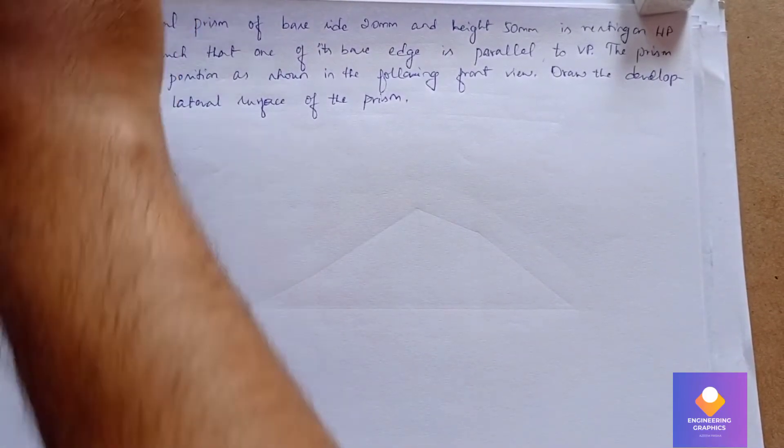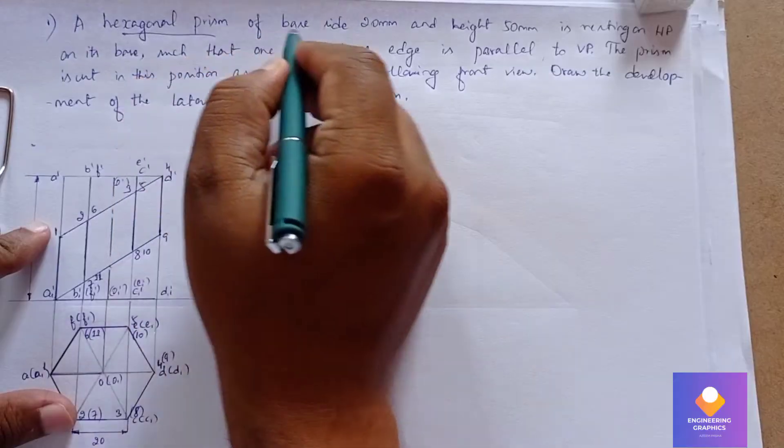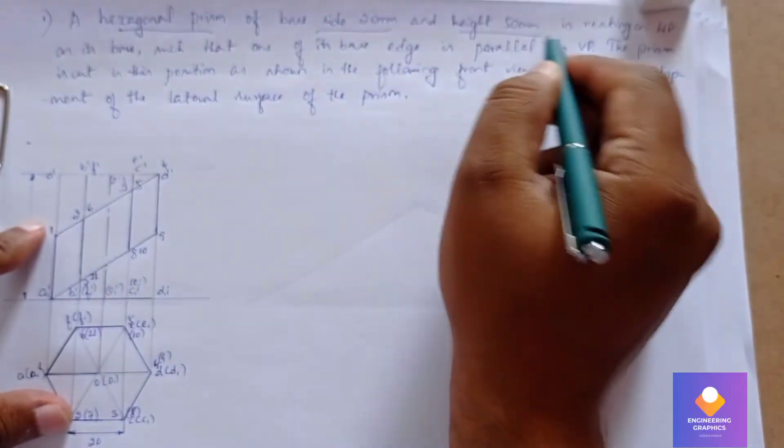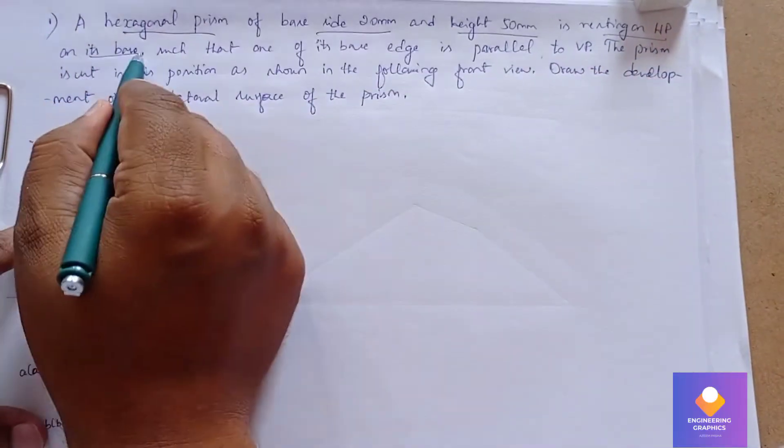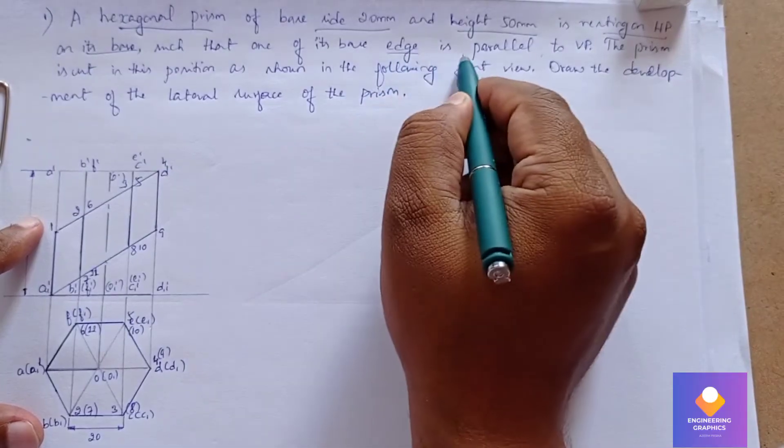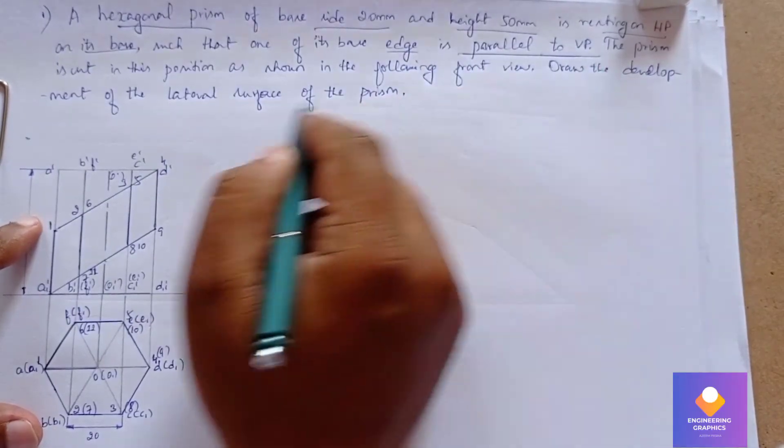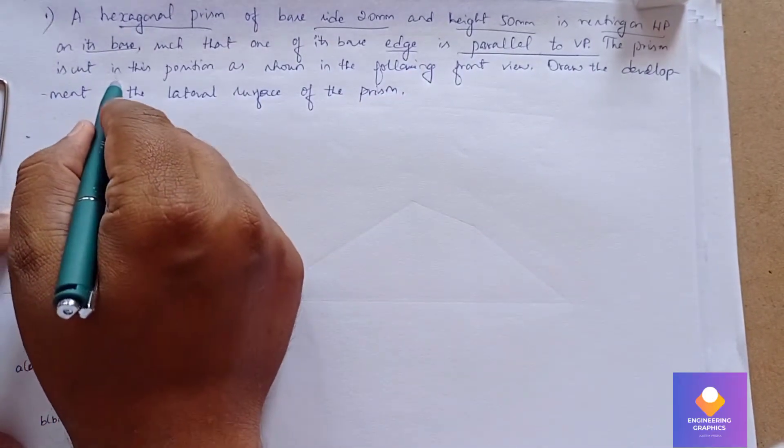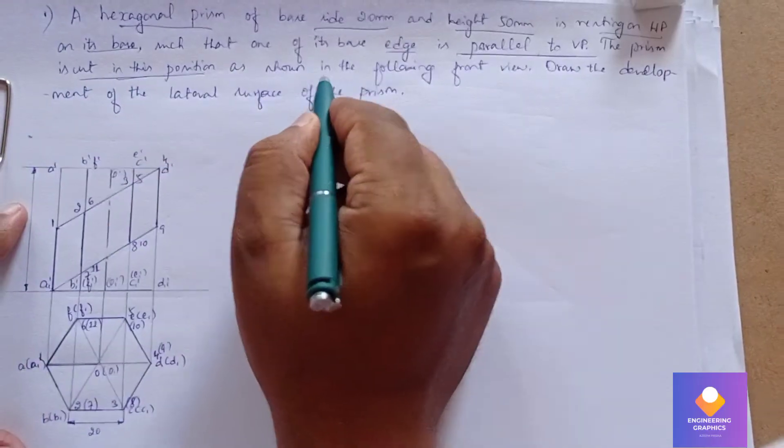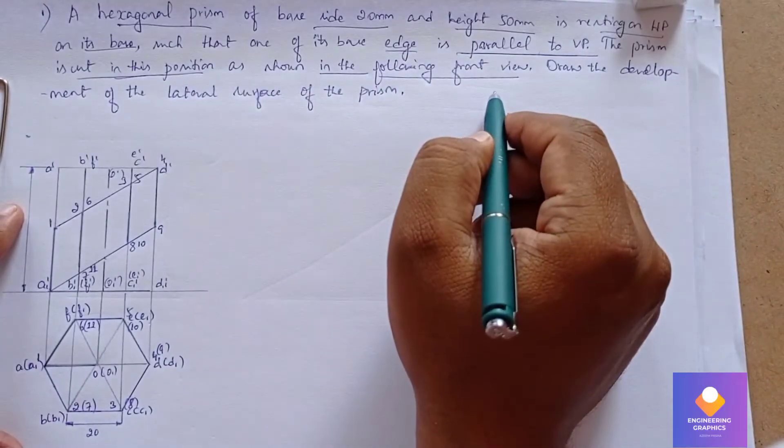A hexagonal prism of base side 20mm and height 50mm is resting on HP on its base, such that one of its edges is parallel to VP. The prism is cut in this position as shown in the following. So we have drawn it in the given position, and it has been cut like this.